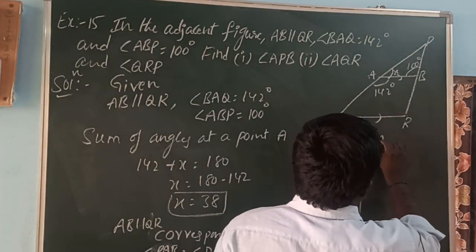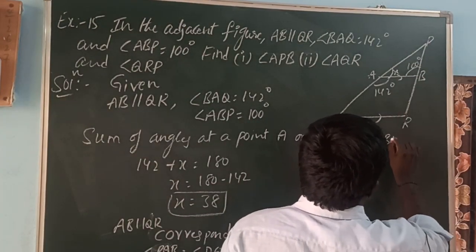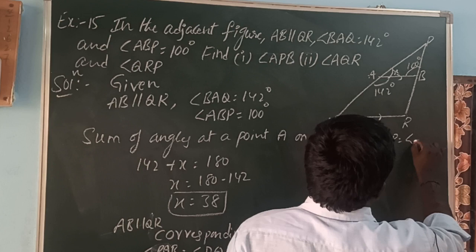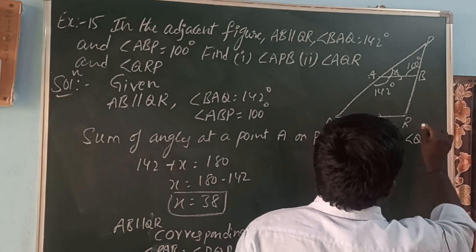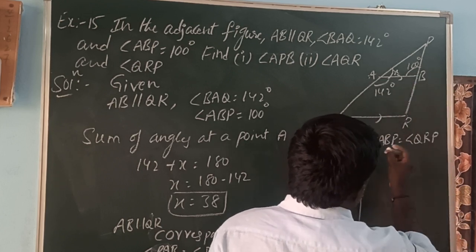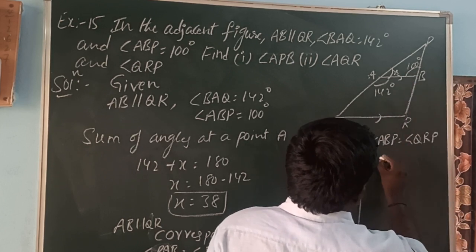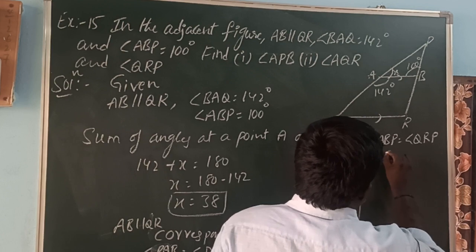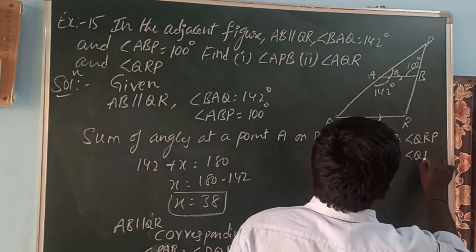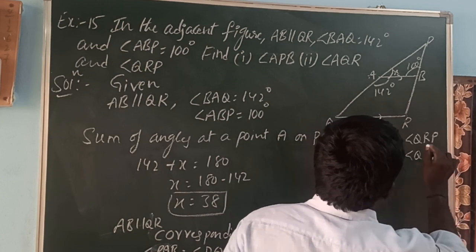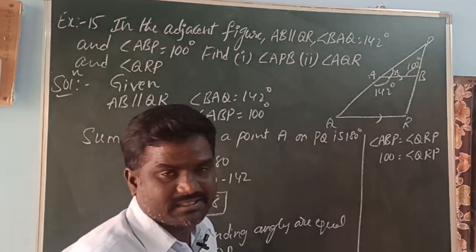Angle ABP is equal to angle QRP, since corresponding angles are equal. So angle ABP is 100 degrees, therefore angle QRP is equal to 100 degrees.